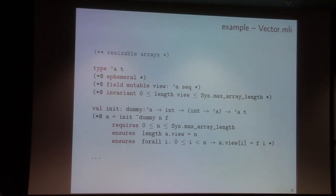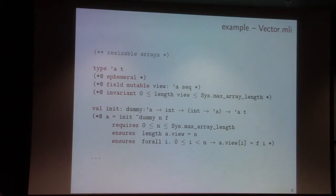For functions, we can say some preconditions — a formula that this function must respect at its entry point. In this case, we are limiting the possible values of the argument. We can also write some postconditions, where, for instance, we say what happens to all elements inside the structure — the result is applying f to each element. And so we have both informal comments and specification together.